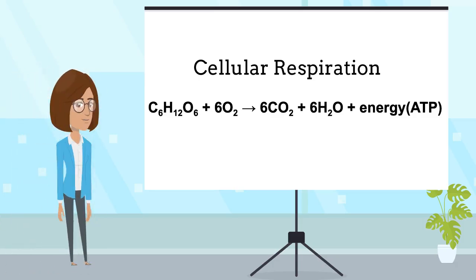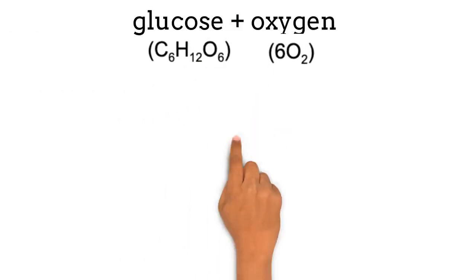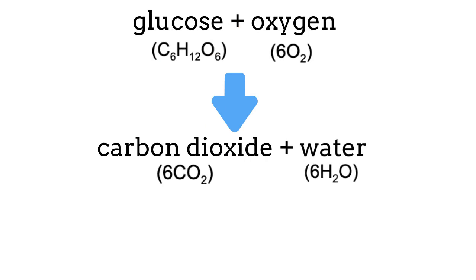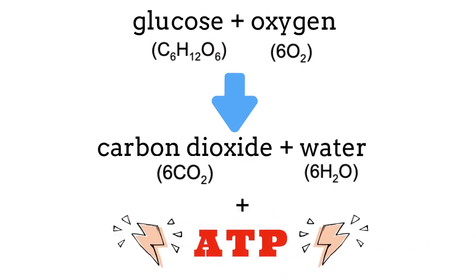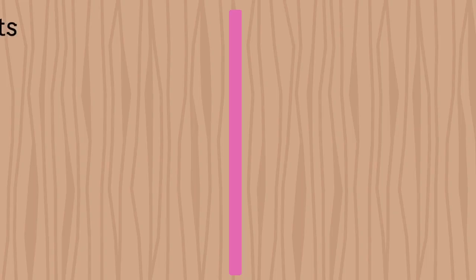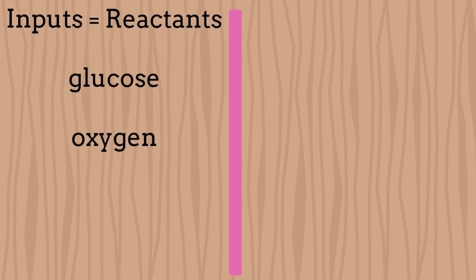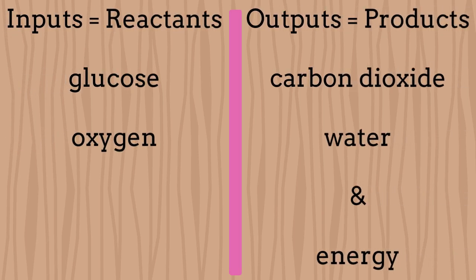Hi there! You're already familiar with this process. Here's a reminder of what is happening during cellular respiration. As you recall, the inputs or reactants of cellular respiration are glucose and oxygen. The outputs or products are carbon dioxide, water, and energy.